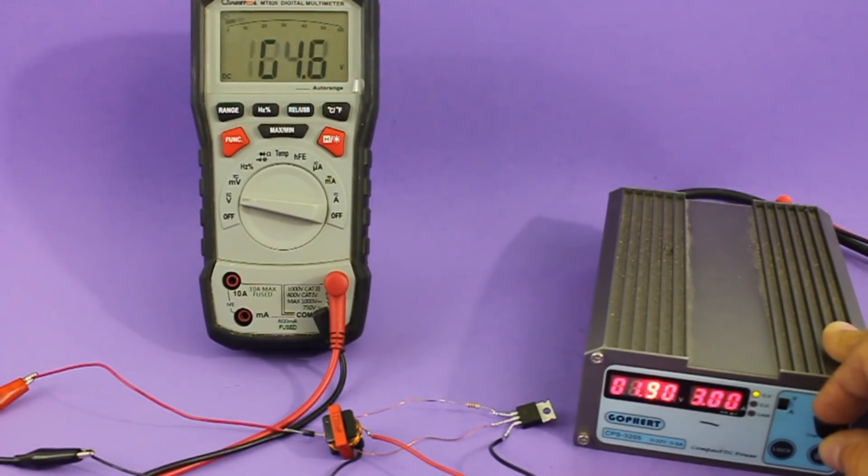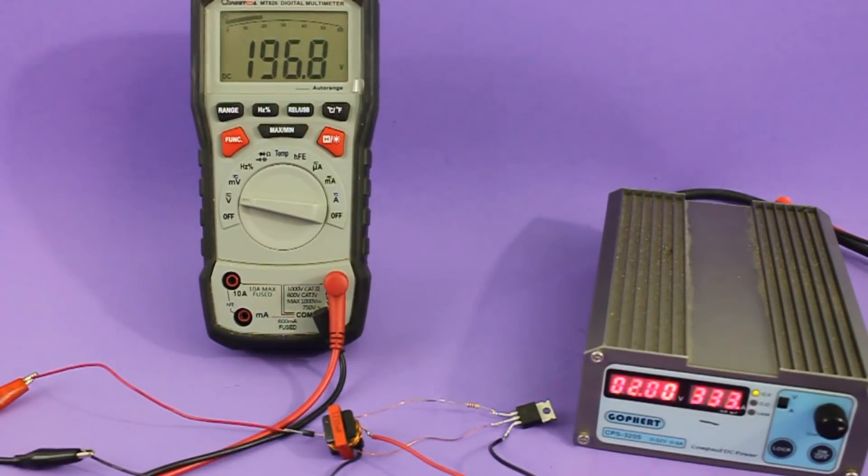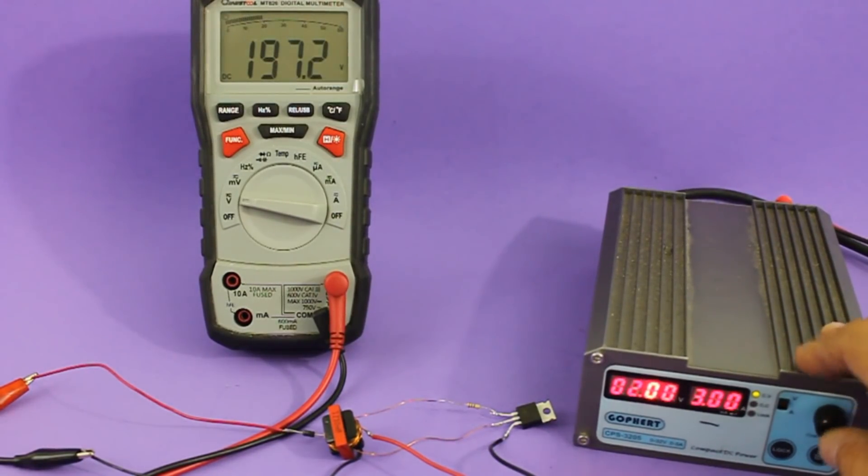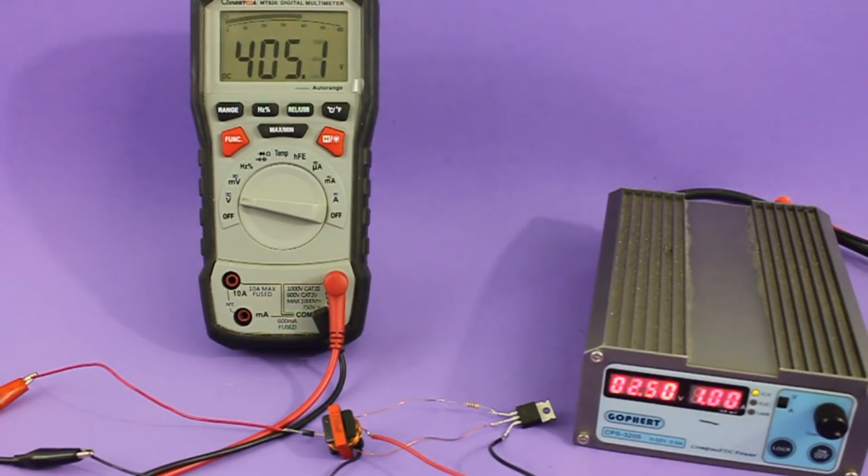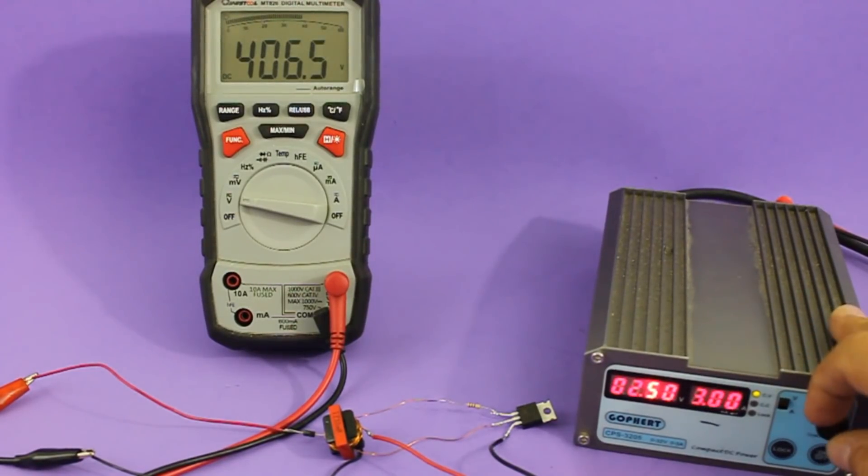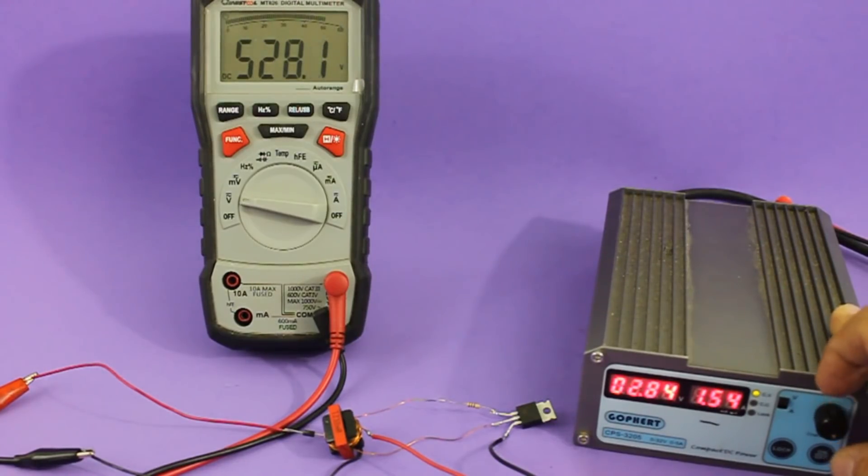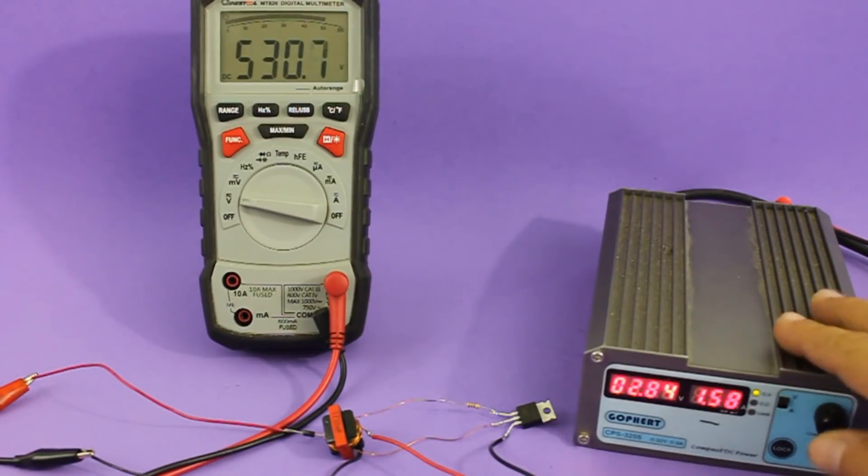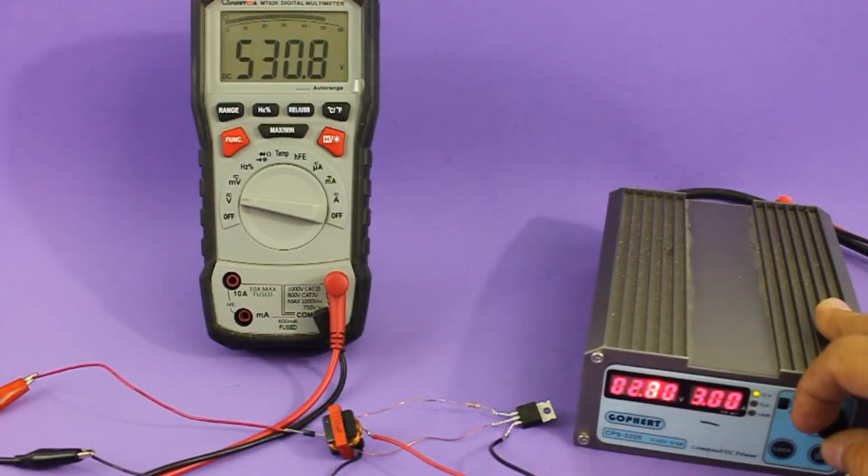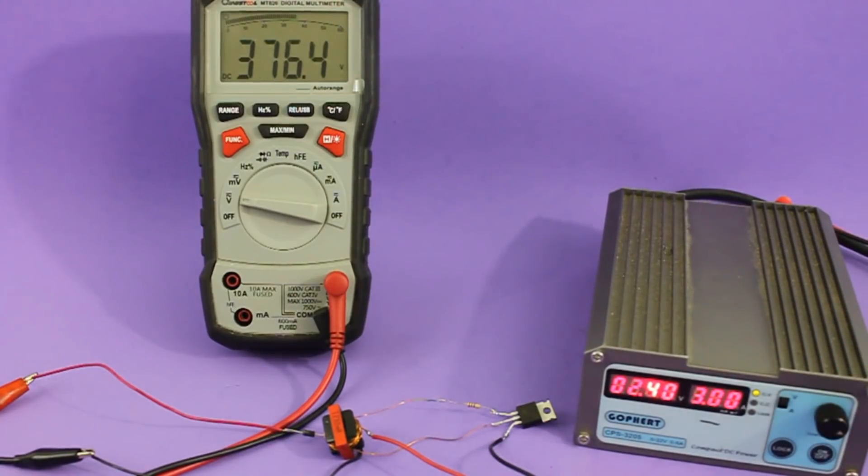Now at 2 volts we get nearly 200 volts. And let me put 2.5 volts and we get 400 volts at the output. Let me increase... at 2.8 we get more than 500 volts. I'm going to turn it down because the coil of the inductor is not designed for more than 500 volts and we can fry the coil.